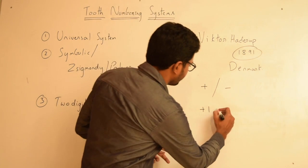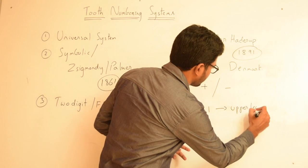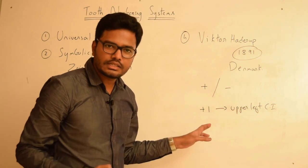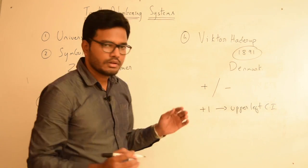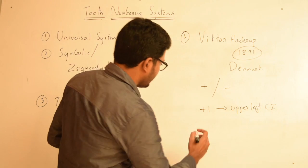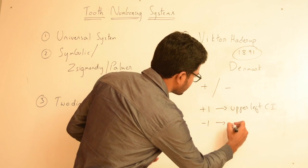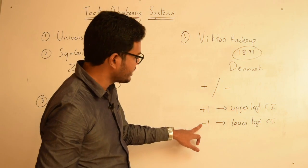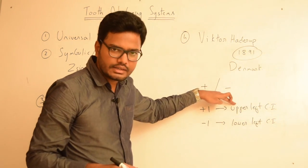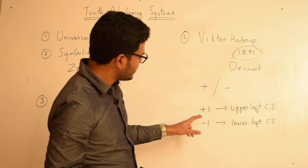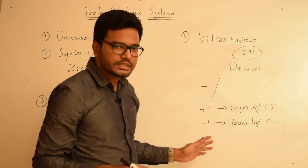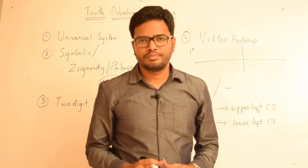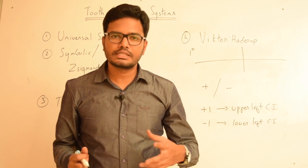For example, if I say '+1,' this represents the upper left central incisor. Since the plus symbol is present to the left of the number, we consider it a left-sided tooth. Plus indicates the maxilla, while minus indicates the mandible. If I say '-1,' it represents the lower left central incisor. If the symbol is on the right side of the number, it should be considered a right-sided tooth.